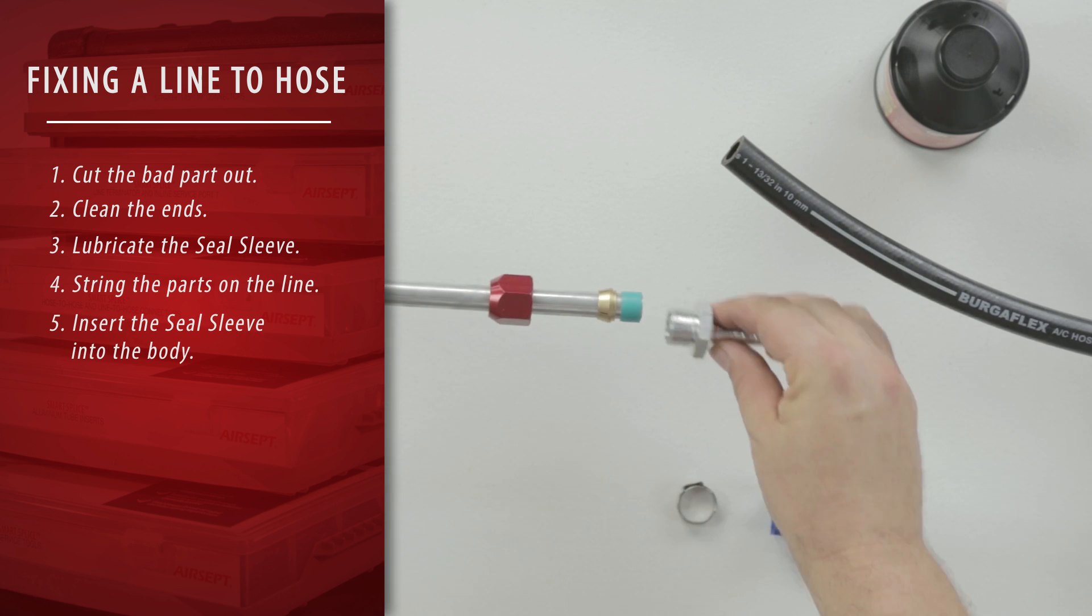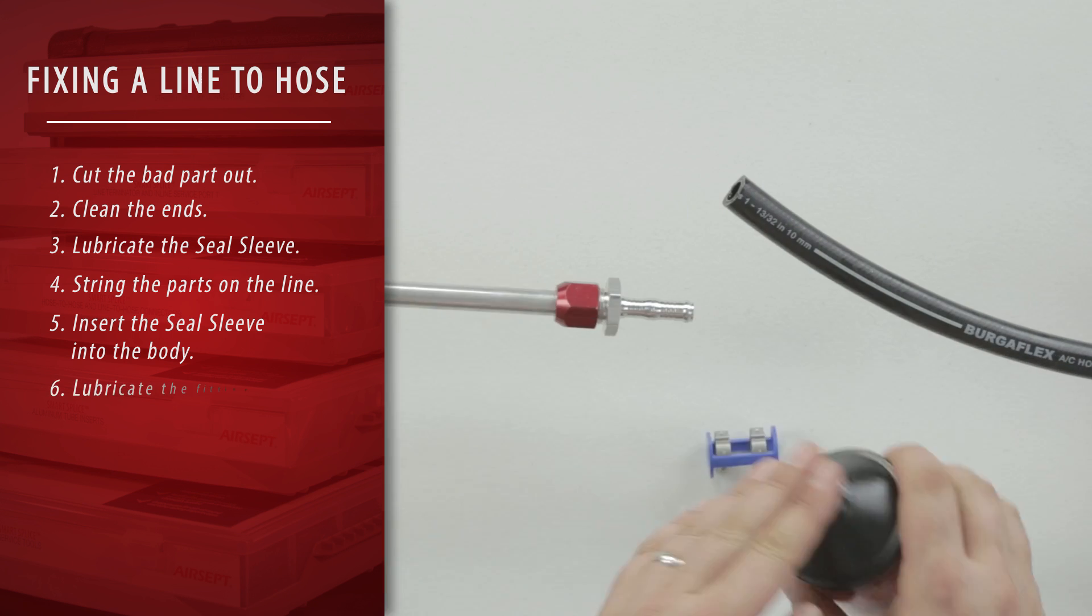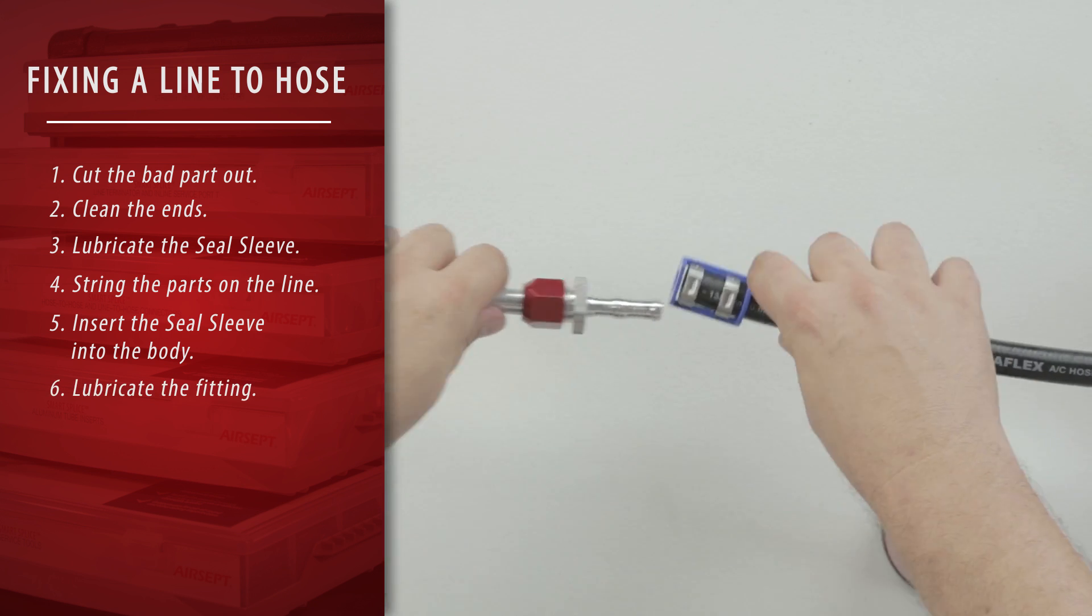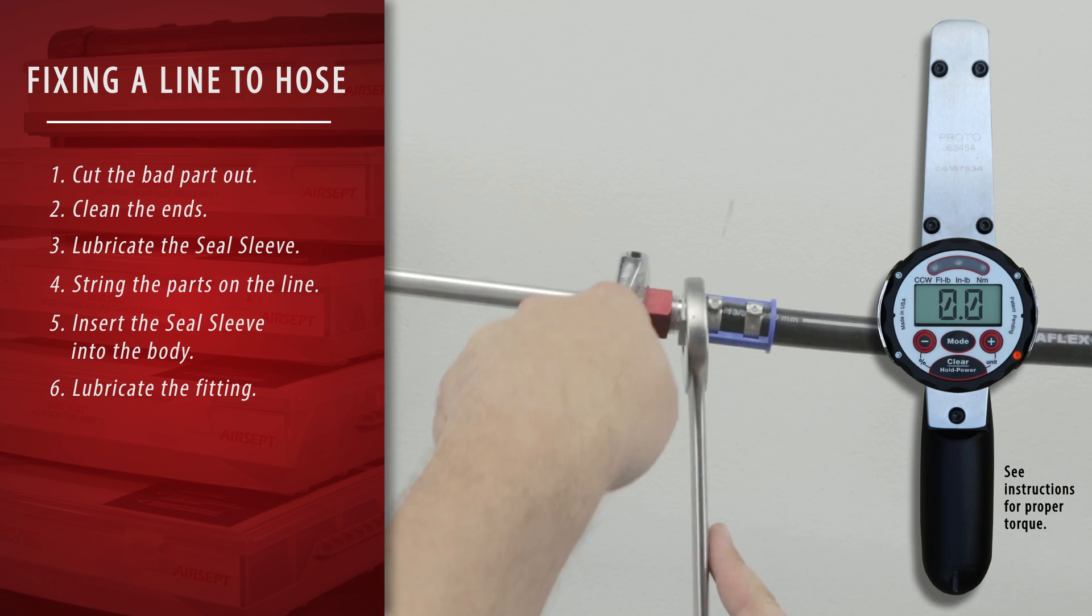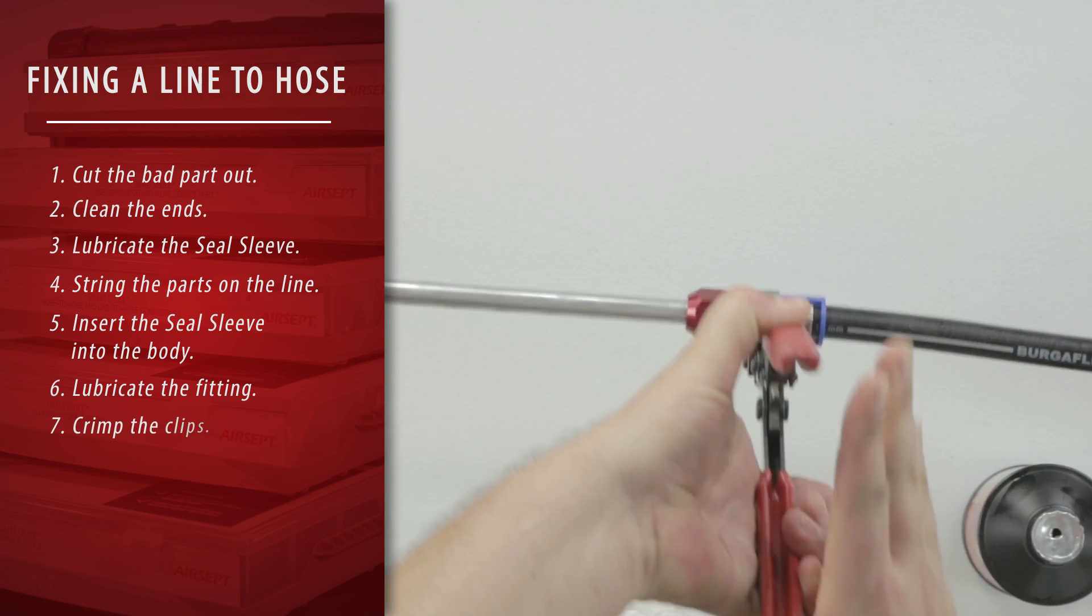Insert the seal sleeve into the body. Lubricate the fitting. On one side, crimp the metal clamps and you're done.